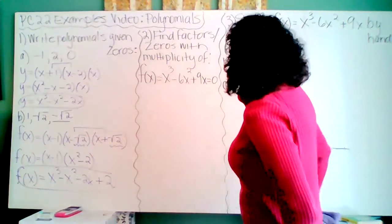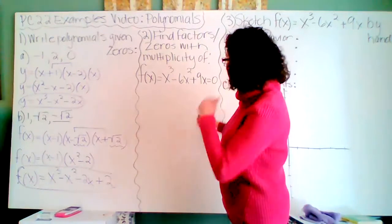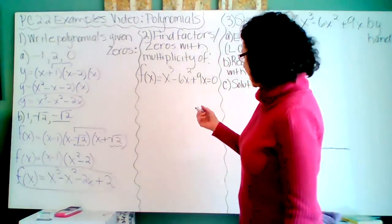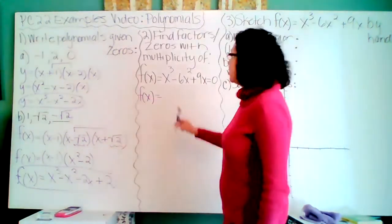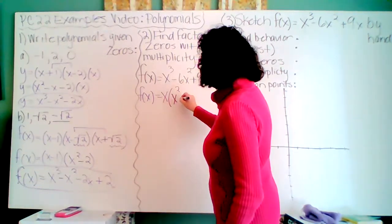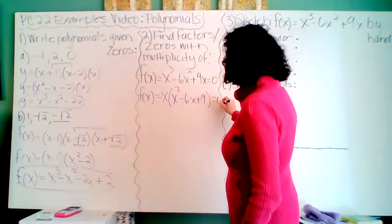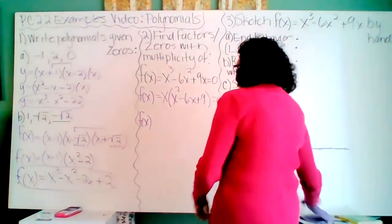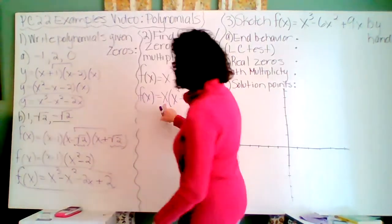Next, find factors and zeros with multiplicity of. So if you've been given this polynomial and it's set equal to 0, let's find those zeros. So obviously, we need to factor this. The first thing we're going to do is a greatest common factor. Notice each term has a greatest common factor of x. And that would leave x squared minus 6x plus 9 equals 0. So here's my x that I factor.